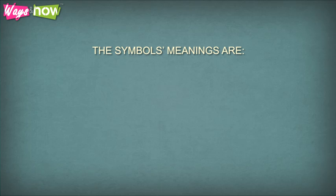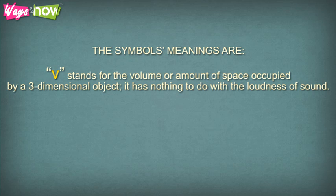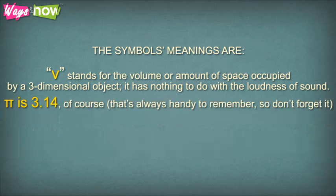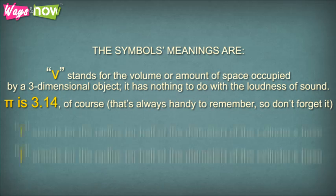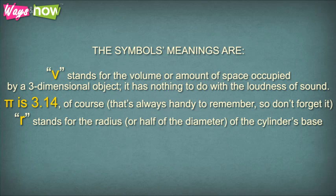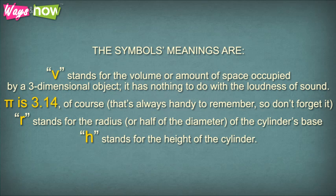The symbol meanings are: V stands for the volume or amount of space occupied by a three-dimensional object. It has nothing to do with the loudness of sound. Pi is 3.14, of course. That's always handy to remember, so don't forget it. R stands for the radius, or half of the diameter of the cylinder's base. H stands for the height of the cylinder.